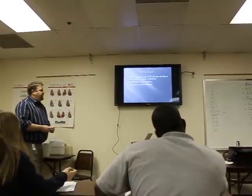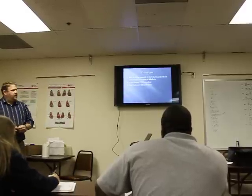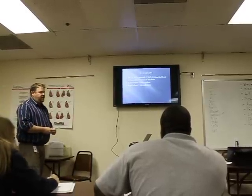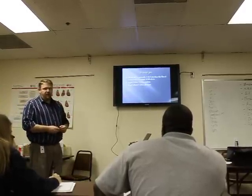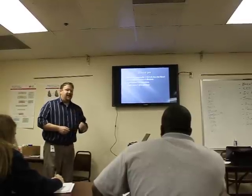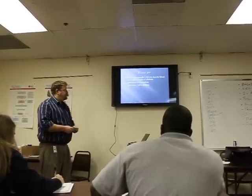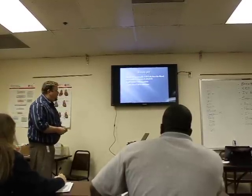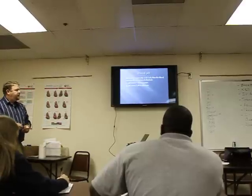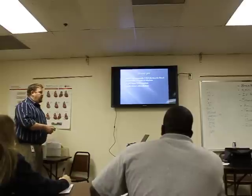Blood pH: your normal blood pH that you need to know is between 7.35 and 7.45, thus the blood is normally in a state of alkalosis. A pH below 7.35 is acidic; pH above 7.45 is alkalotic.